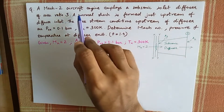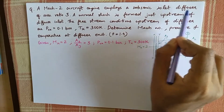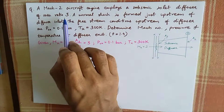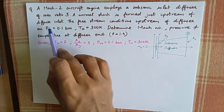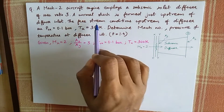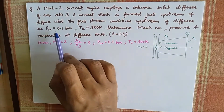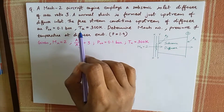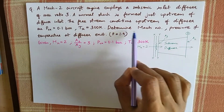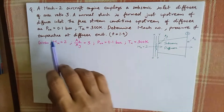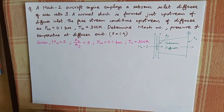A Mach 2 aircraft engine employs a subsonic inlet diffuser of area ratio 3. A normal shock is formed just upstream of the diffuser inlet. The free stream conditions upstream of the diffuser are: P0x is equal to 0.1 bar and Tx is equal to 300 Kelvin. Determine Mach number, pressure, and temperature at the diffuser exit. Gamma is equal to 1.4.